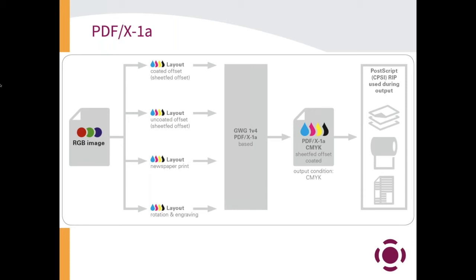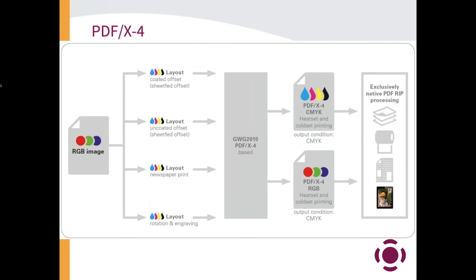CMYK can be very different based on the devices, and as we get more involved in digital print — whether toner or inkjet — the CMYK model is a little more stringent and not as flexible as it needs to be. A key point: PDF/X-1a did not support transparency. It's a very limited space, which is one of the reasons why PDF/X-4 was developed as a standard.